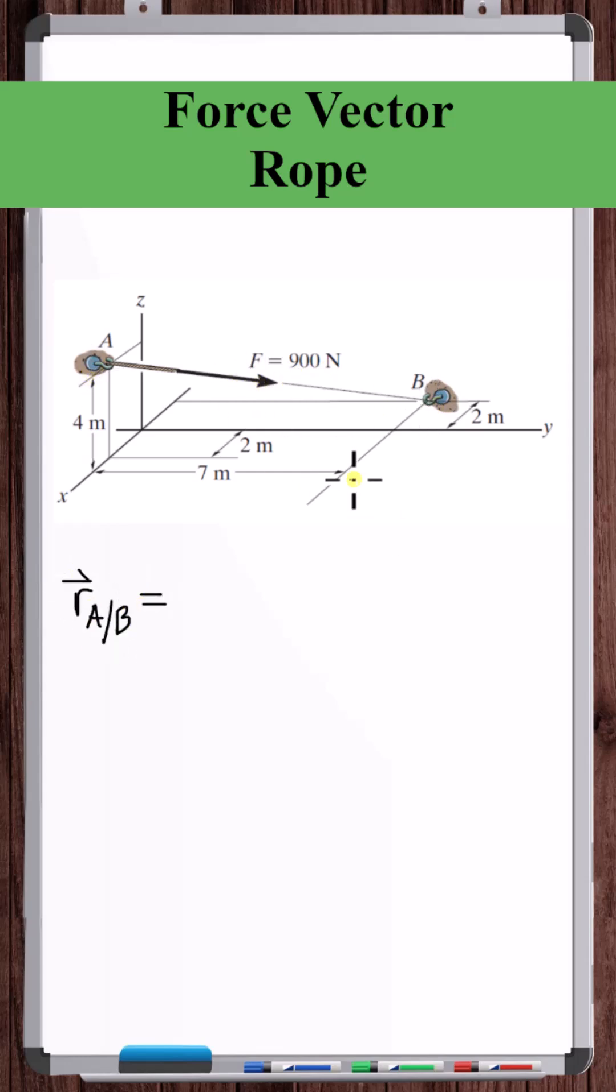So what is the position vector from A to B? The x-coordinate of B is minus 2 minus the x-coordinate of A, which is 2, plus the y-coordinate of B is positive 7 minus the y-coordinate of A is 0, j-hat, plus the z-coordinate of B is 0, the z-coordinate of A is 4, k-hat.